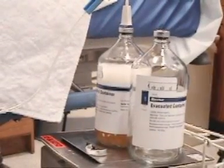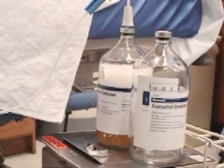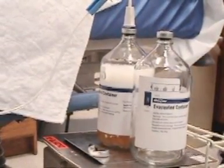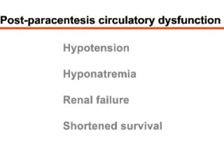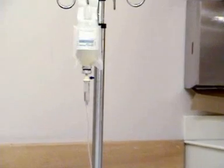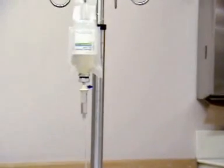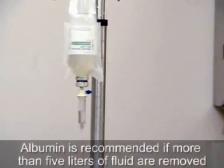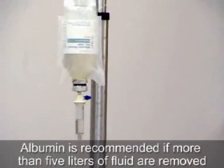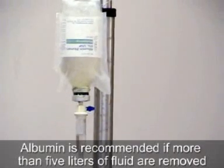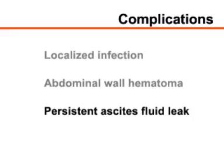Post-paracentesis circulatory dysfunction may occur after large-volume paracentesis and may lead to hypotension, hyponatremia, renal failure, and shortened survival. Although the use of albumin as a plasma expander is controversial, its use is recommended if more than 5 liters of fluid have been removed. Other complications of paracentesis include localized infection, abdominal wall hematomas, and persistent ascites fluid leak.